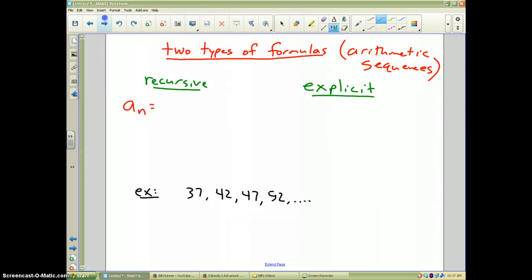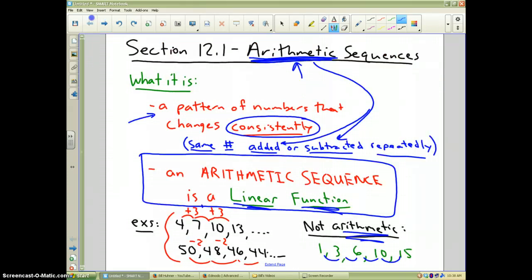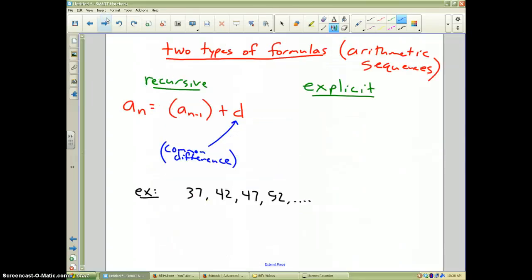The new term, a sub n, is equal to the prior term plus d. Now what is d? D is the common difference. I'm going back a slide. That's like these numbers right here. Plus 3 would be the common difference. Minus 2 would be the common difference. Whatever you add or subtract goes in that spot and you're done. That's the recursive formula for any arithmetic sequence.